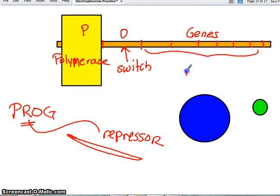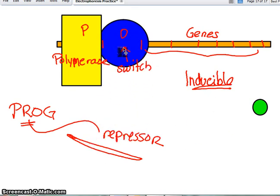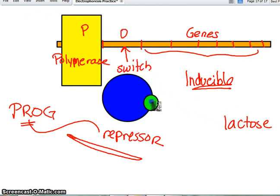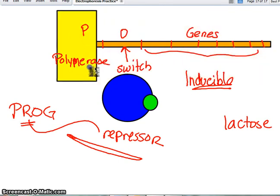If it is an inducible operon, that means it's usually off, but it can be induced. That means that typically the repressor protein that's being made is here already. But for example, let's say this is an operon to digest lactose. And all of a sudden the bacteria comes in contact with lactose. One of those lactoses comes over here and binds to the protein and boom, it changes shape and gets removed. And now the genes are all turned on to digest lactose.